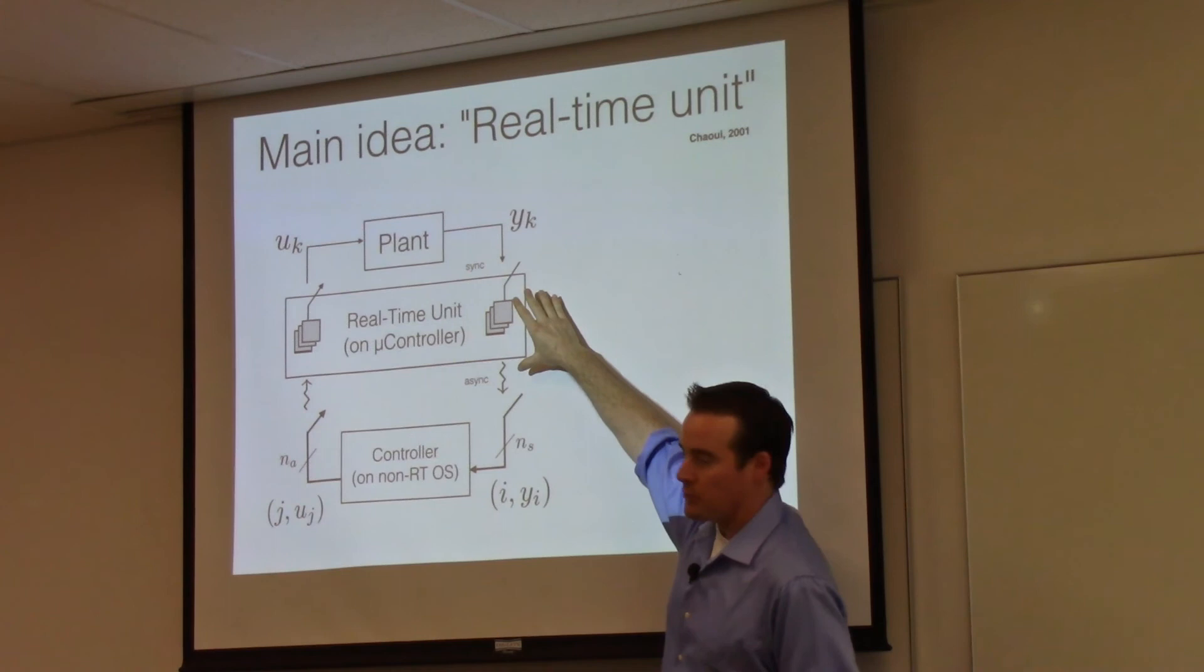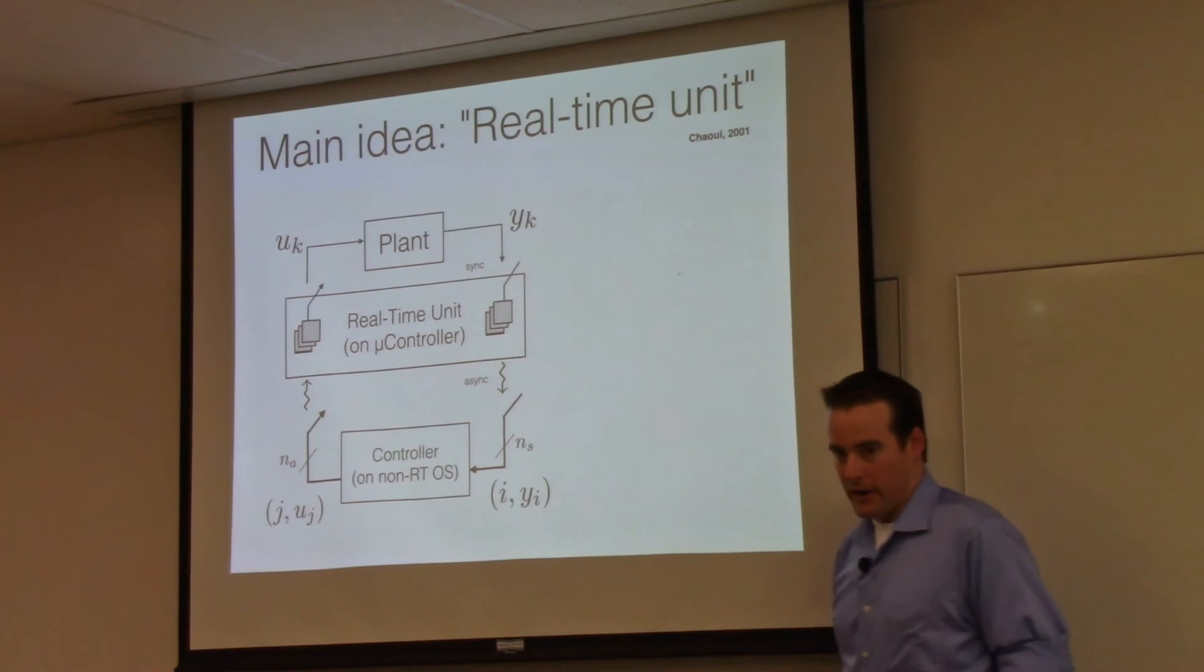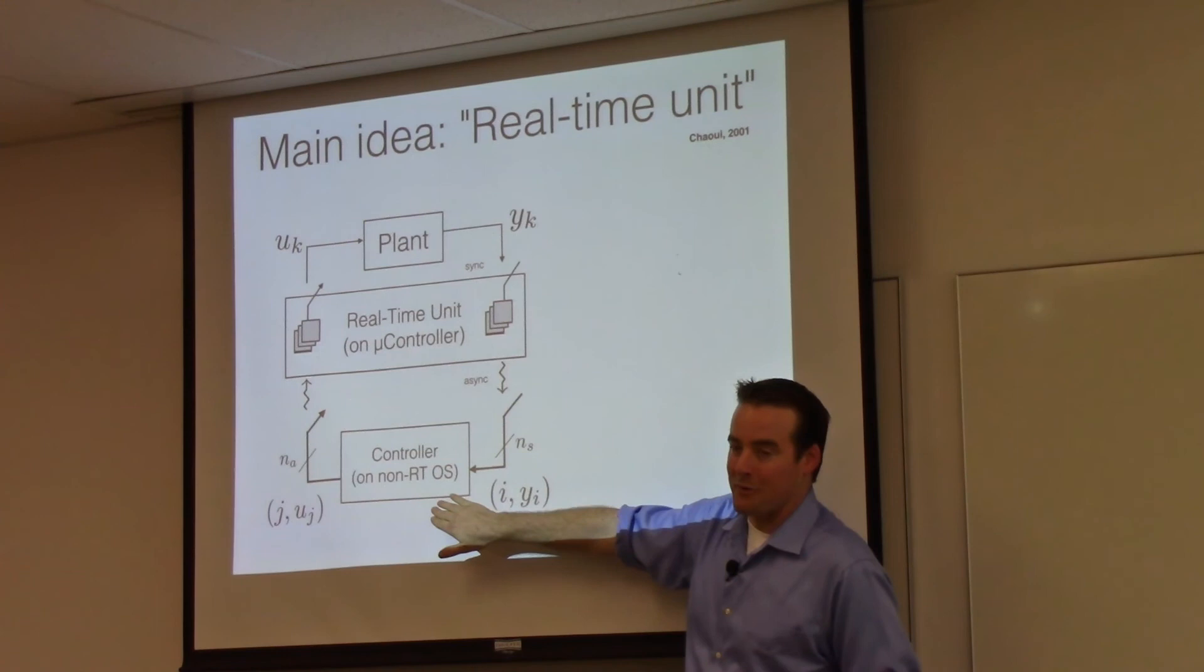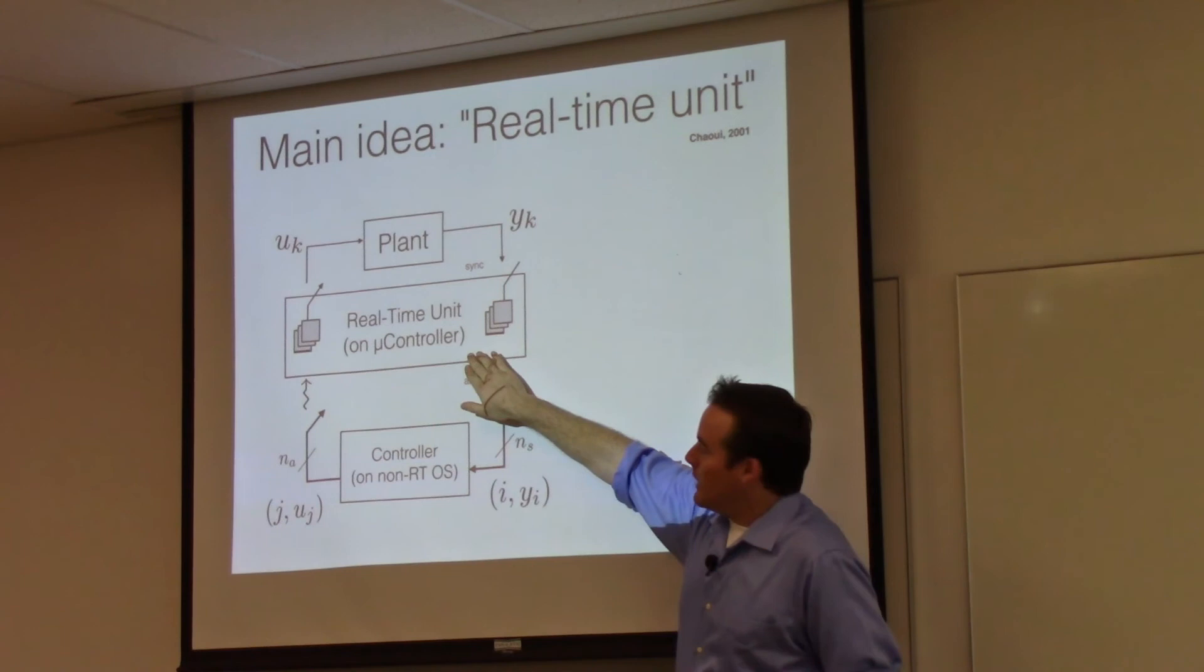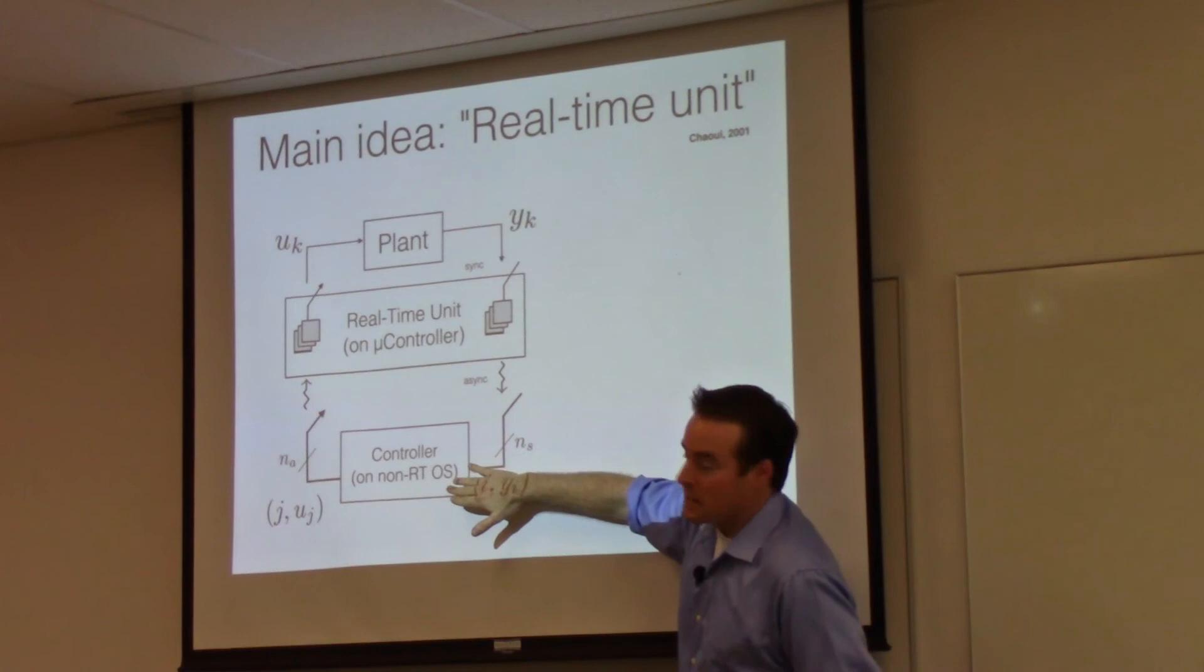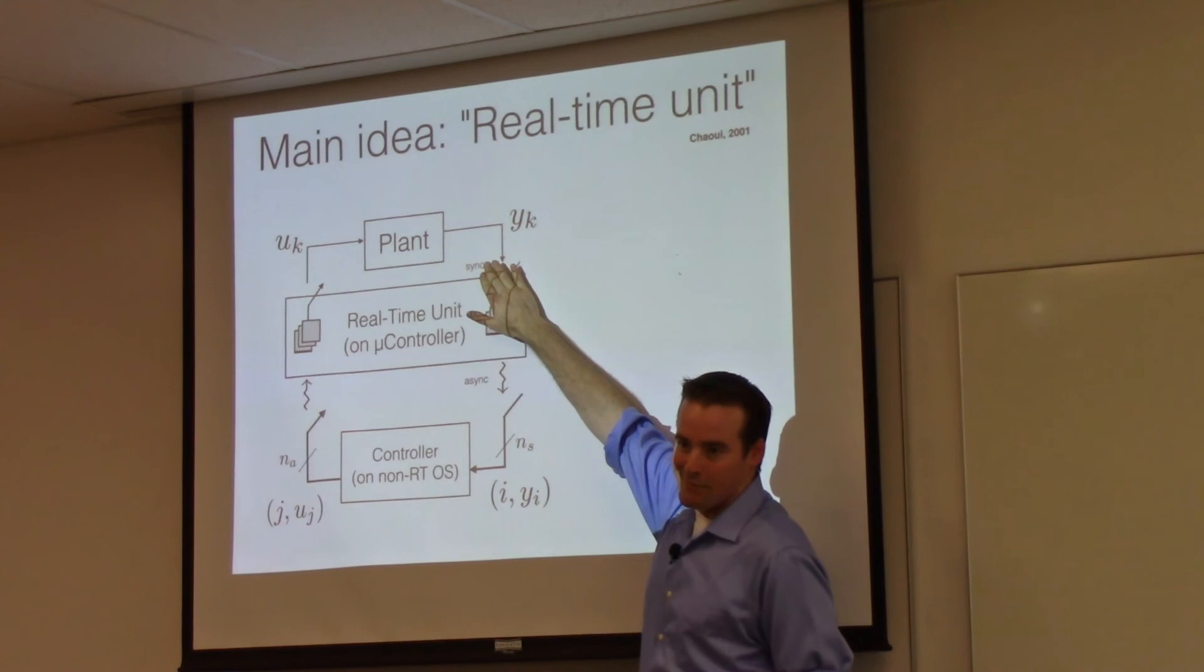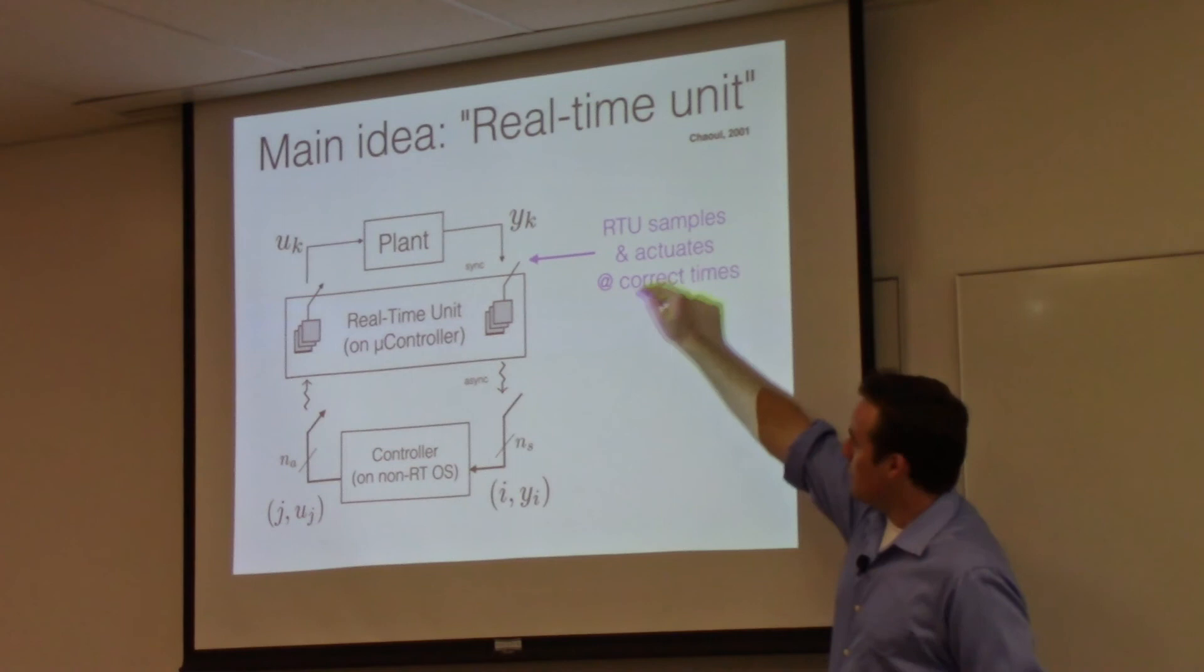You have the plant up here that you're trying to control and you have a controller that's running on the non-real-time operating system. In between the two, let's put this thing called a real-time unit, which is running on some microcontroller. It's a very small little program that is running. This microcontroller is not sharing the CPU with the non-real-time operating system. It has its own CPU, its own little memory. It can run entirely independently and it can obviously communicate with the main CPU and with the plant. It can have control over the IO so that it can affect the real world.